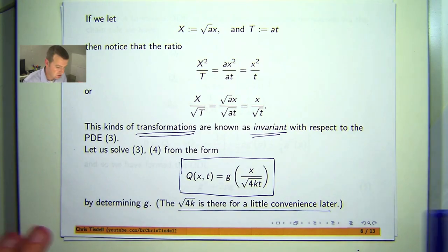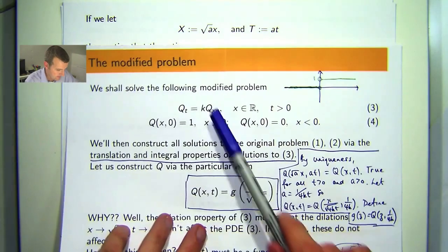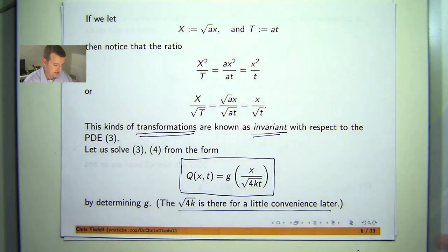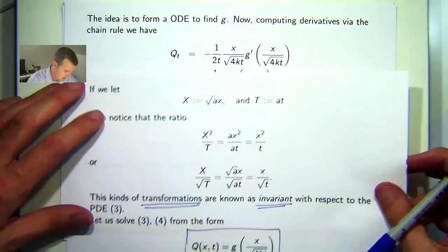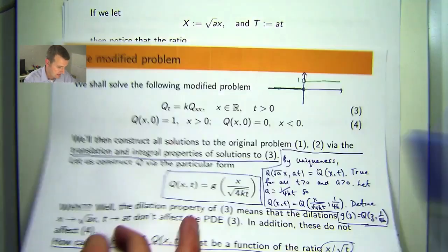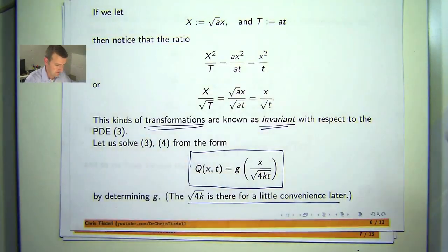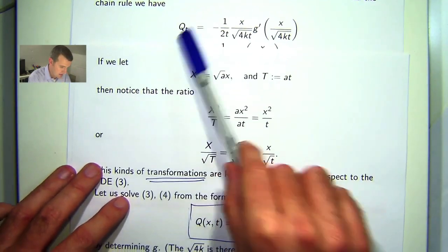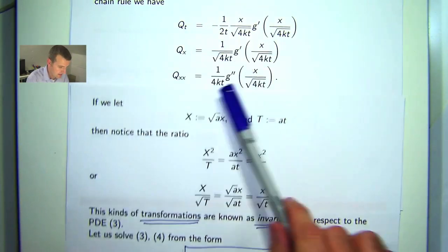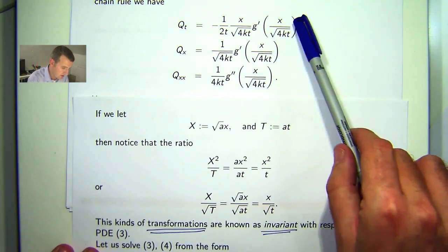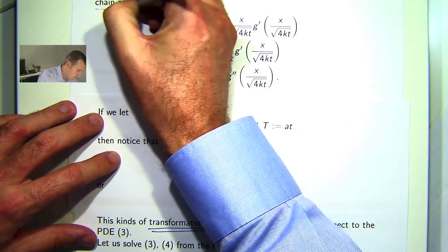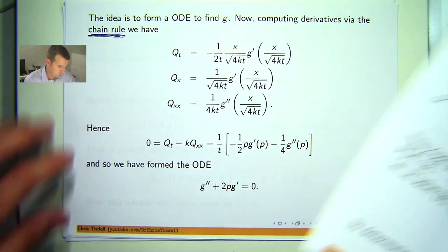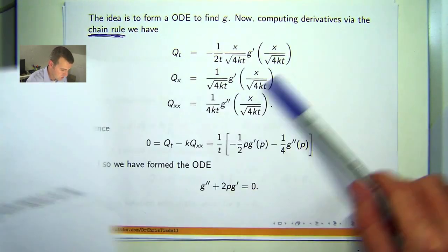So what we're going to do is we're going to reduce this problem down to an ODE, an ordinary differential equation. So what I need to do is in this form calculate the partial derivatives that lie in 3. So if I use the chain rule to compute q sub t, q sub x and q sub xx with a little bit of work, you can come up with these expressions. Here we're using the chain rule.